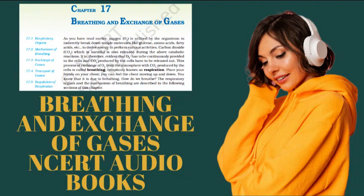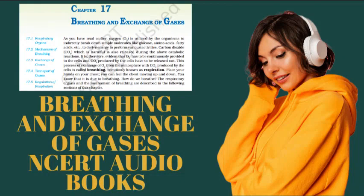Question 9: What happens to the respiratory process in a man going up a hill? Question 10: What is the site of gaseous exchange in an insect? Question 11: Define oxygen dissociation curve. Can you suggest any reason for its sigmoidal pattern? Question 12: Have you heard about hypoxia? Try to gather information about it and discuss with your friends. Question 13: Distinguish between A. IRV and ERV, B. Respiratory capacity and expiratory capacity, C. Vital capacity and total lung capacity. Question 14: What is tidal volume? Find out the tidal volume for a healthy human in an hour.